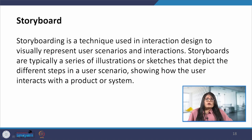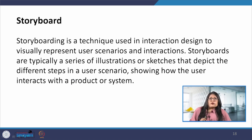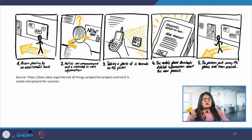The next technique is storyboarding. Storyboarding is a technique used in interaction design to visually represent user scenarios and interactions. Storyboards are typically a series of illustrations or sketches that depict the different steps in a user scenario, showing how the user interacts with a product or system. Stories are a natural way for people to communicate and explain their actions, making them relatable to stakeholders. These stories typically focus on users' goals and what they aim to achieve, shifting the focus from technology to human activity. Notable references to specific apps, behaviors or locations indicate their significance and require close examination.